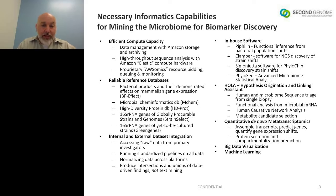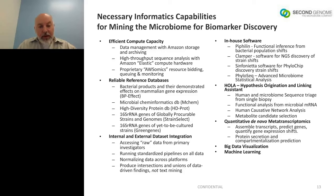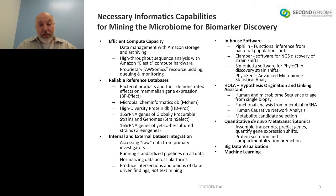Necessary informatics capabilities for microbiome biomarker discovery include efficient compute capacity. We chose the Amazon cloud because it's elastic — easy to scale up when we need more compute power, and we're not paying for it when we're not using it. We built software that bids for resources, queues our processing and mapping, and monitors how things are going. Amazon has some built-in bidding, queuing, and monitoring systems, but we found you need a custom cloud deployment for different pipelines.